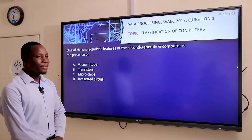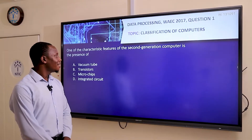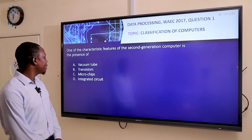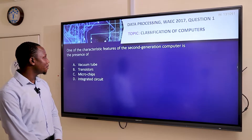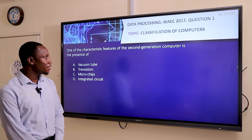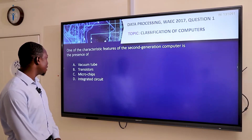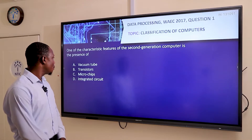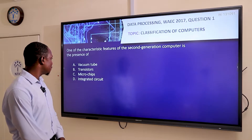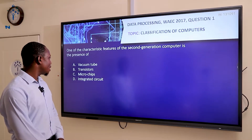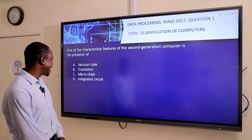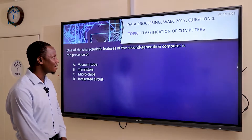Question one says: one of the characteristic features of the second generation of computers is the presence of — A, Vacuum Tubes; B, Transistors; C, Microchips; and D, Integrated Circuit.